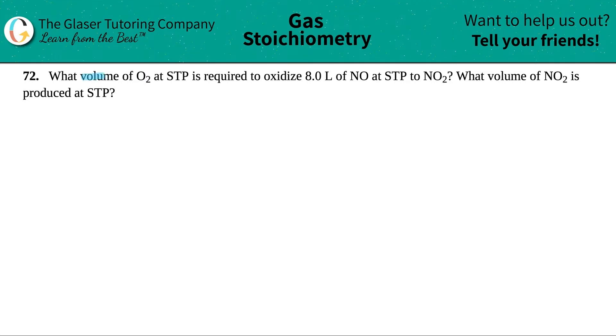Number 72, what volume of O2 at STP is required to oxidize 8.0 liters of NO at STP to NO2? And then the second question is what volume of NO2 is produced at STP?